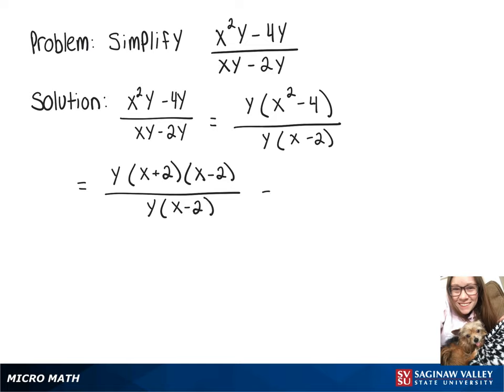Now we can rewrite that whole fraction as y over y times x minus 2 over x minus 2 times x plus 2. Our y over y and x minus 2 over x minus 2 will cancel out, leaving the final answer x plus 2.